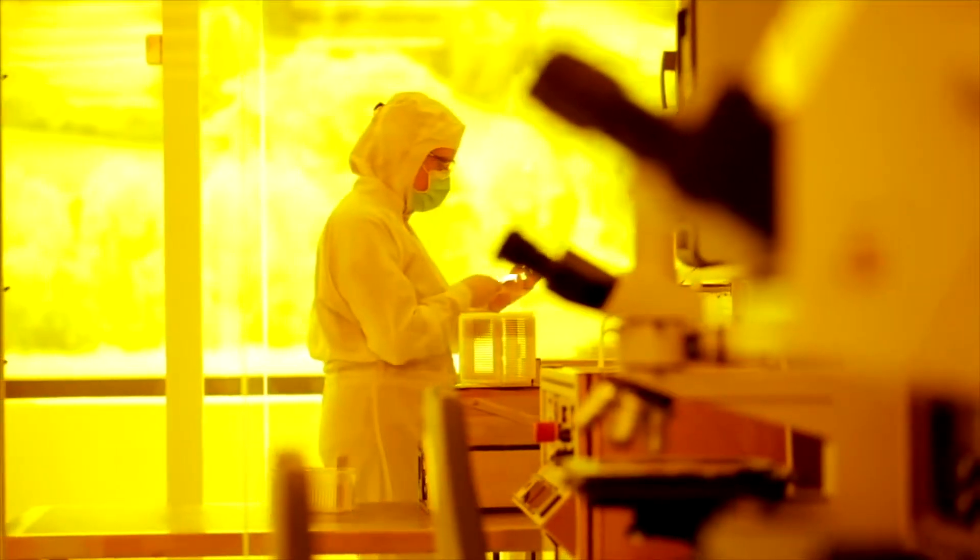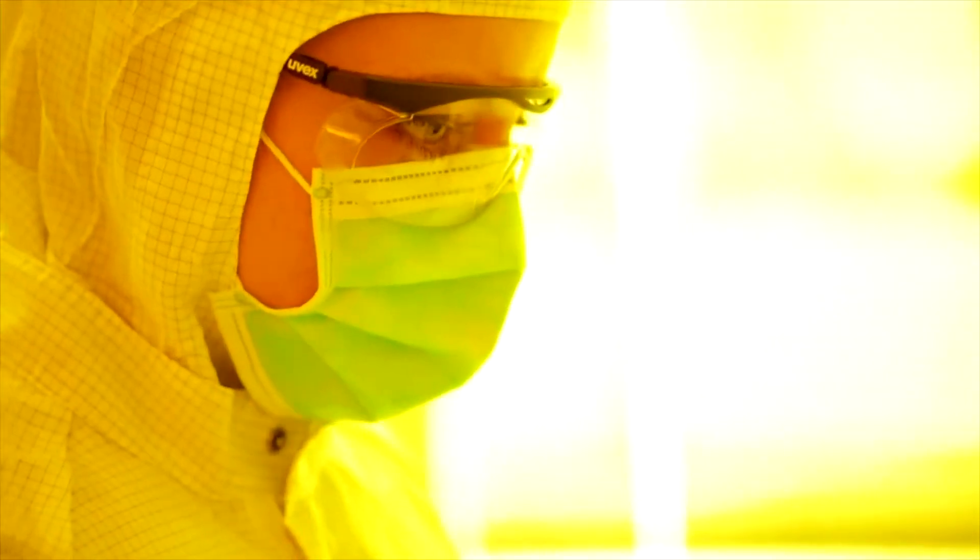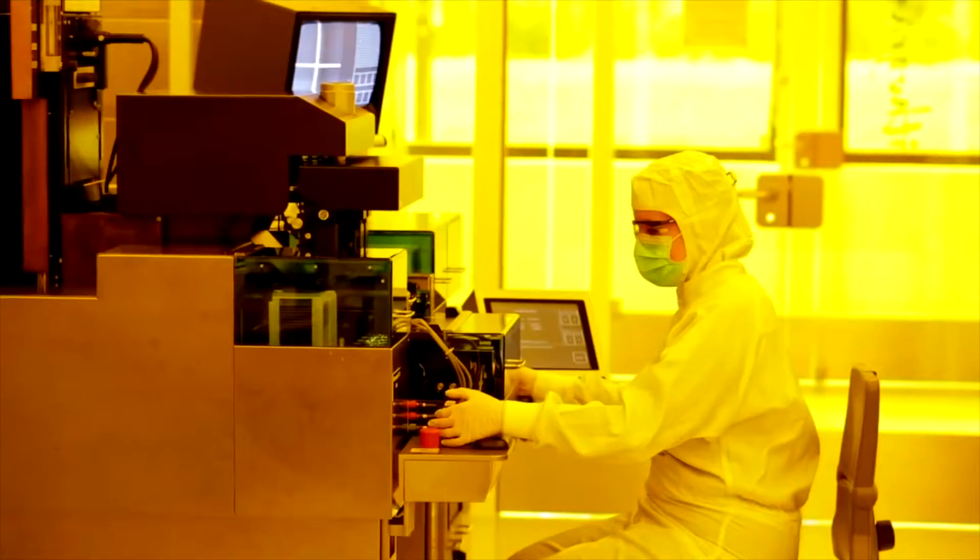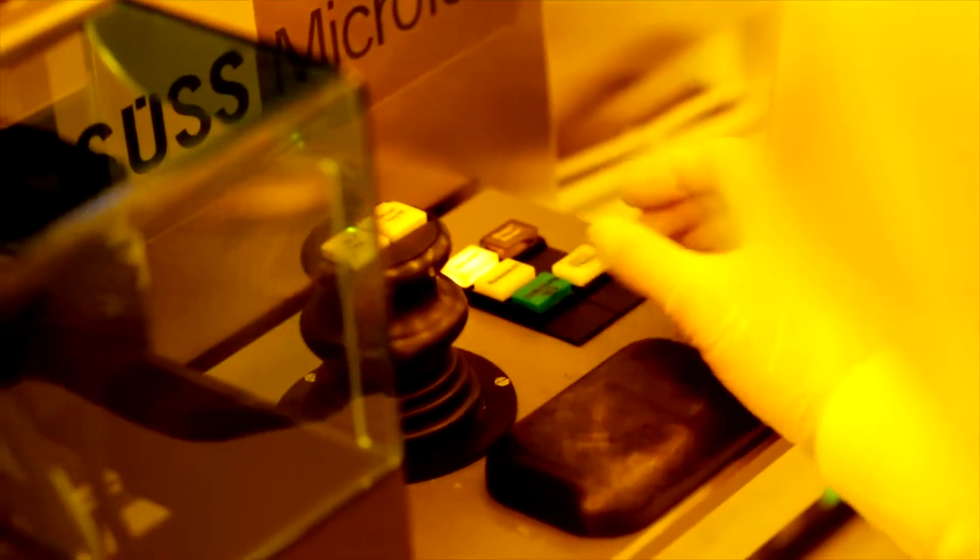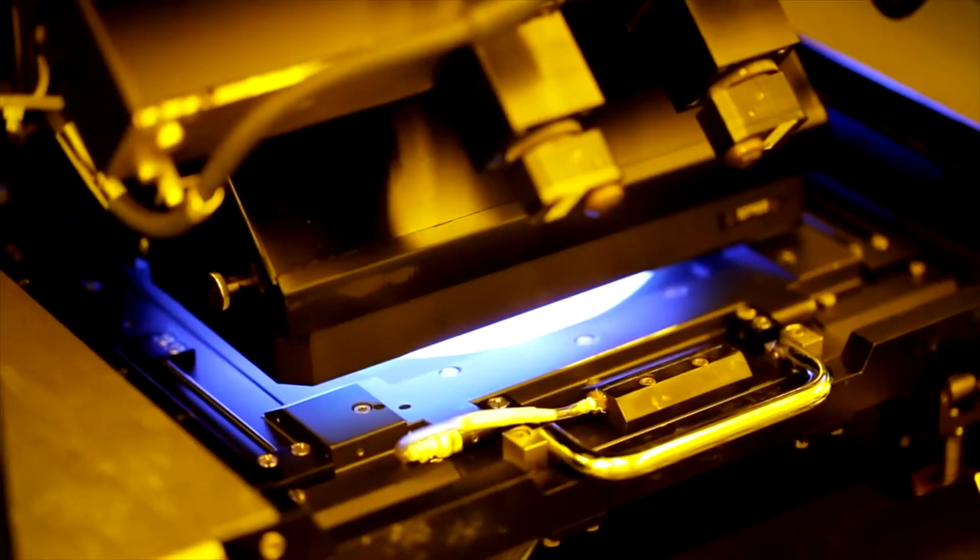The pattern of the sensor structure is defined by multiple steps: spin coating of a photosensitive resist, illumination of the photosensitive resist through a mask, developing the photoresist and etching. Finally, the photoresist is removed, leaving only the sensor structure on the chip.